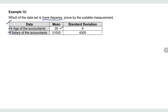For the age of accountants, the mean is 26 and the standard deviation is 6. For the salary of accountants, the mean is 31,000 and the standard deviation is 4,000. To know which data set is more dispersed, you must compare the coefficients of variation of both data sets. The data with the higher coefficient of variation is more dispersed.